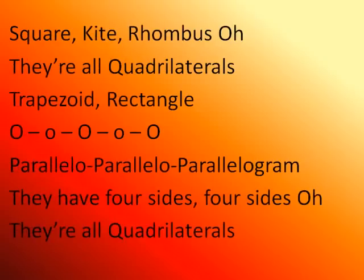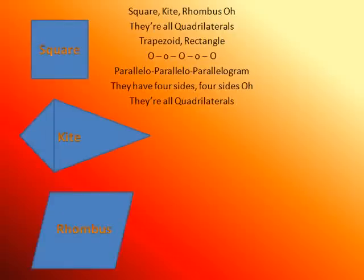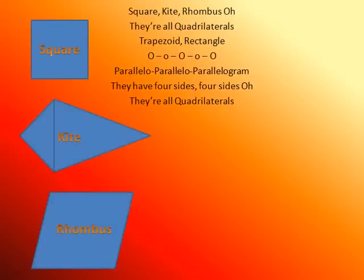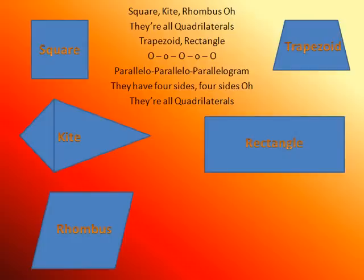Square, kite, rhombus — they're all quadrilaterals. Trapezoid, rectangle. Parallelogram, they have four sides, four sides. They're all quadrilaterals. Square, kite, rhombus — they're all quadrilaterals. Trapezoid, rectangle. Parallelogram, they have four sides, four sides. They're all quadrilaterals.